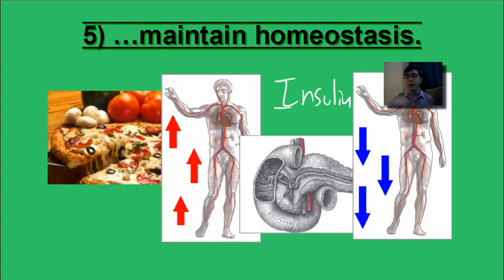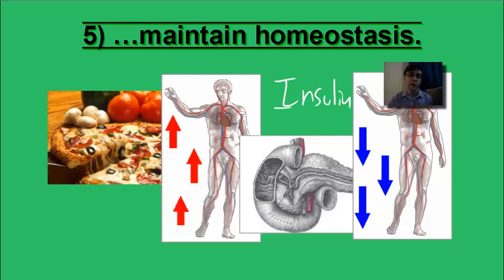We can't control the weather — it's a part of the environment, it's outside of us, and it is not under homeostatic control. Homeostasis does allow us to control our blood sugar levels, our stomach acidity, our body temperature, and other different parts of the inside of our body.